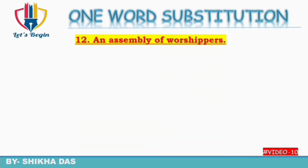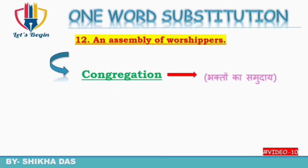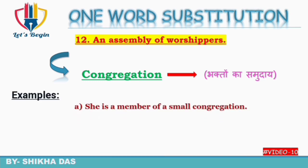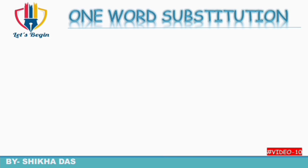Question number 12: an assembly of worshippers — worshippers ka group, ya sakti hai, samuday. Isko one word mein kehte hain 'congregation'. Congregation ko Hindi mein kehte hain 'bhakton ka samuday'. Examples: 'She is a member of a small congregation.' 'The congregation processed into the church.'